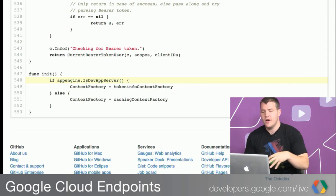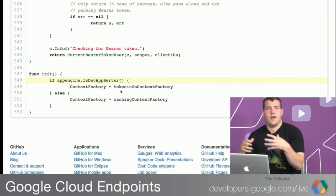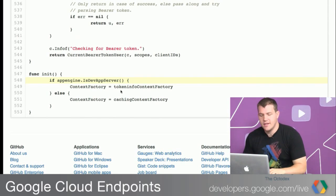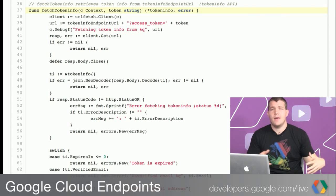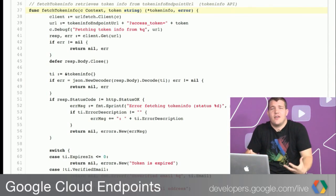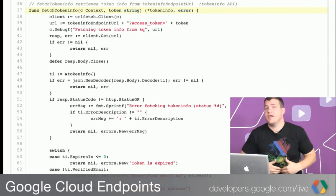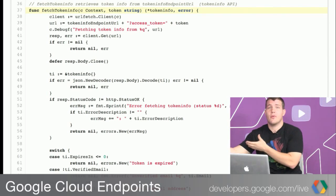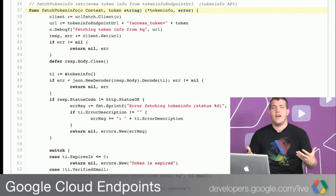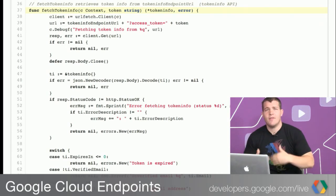In the dev app server case — when we're not in production — we have a special context factory made just for the local host or offline case. This special context factory will actually fetch the token info by hitting the token info API, which is another discovery-based Google API, and say 'here's the access token, can you tell me more about it?' If we had ID tokens on the development server, we wouldn't have to make this round trip. We have full support for tokens both in production and in the development app server, so you can test locally and find out if the user is valid, signed in, and the token is good — everything just works out of the box with Alex's awesome Go endpoints library.